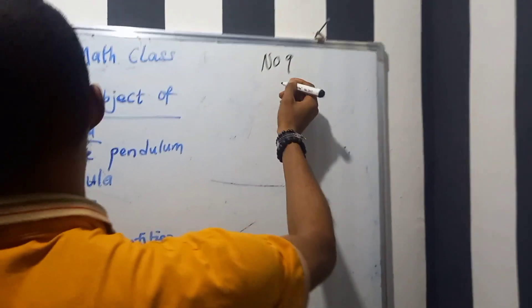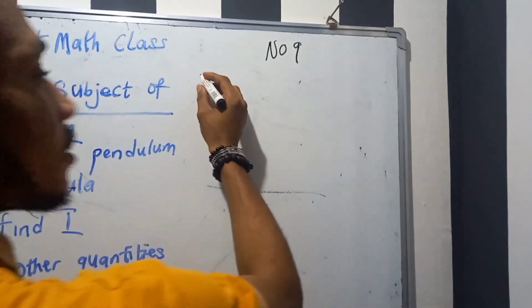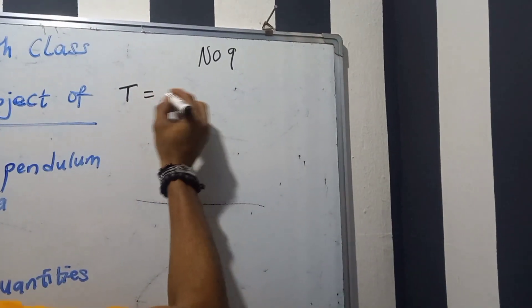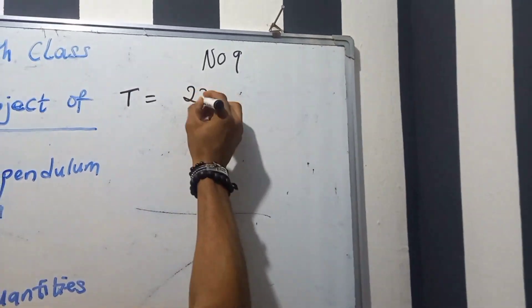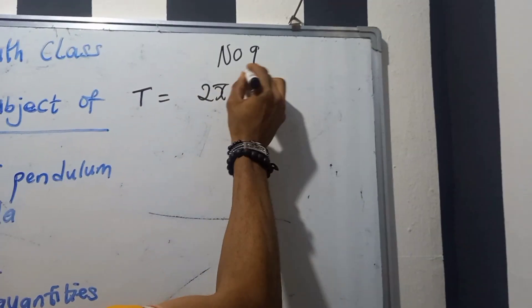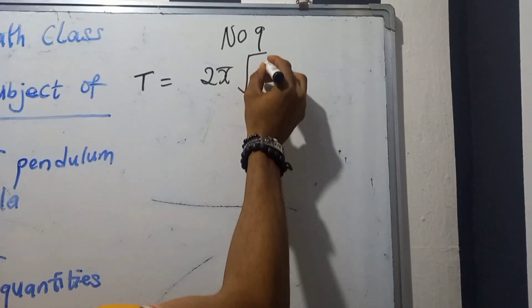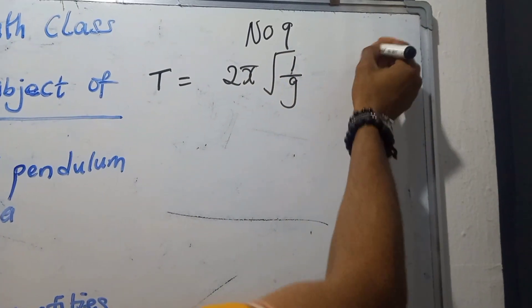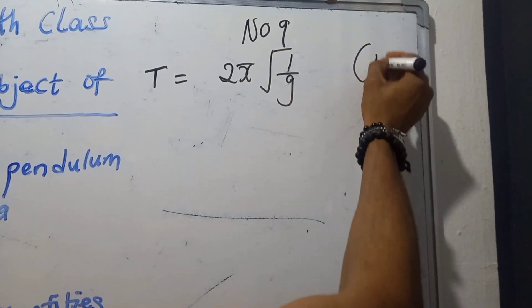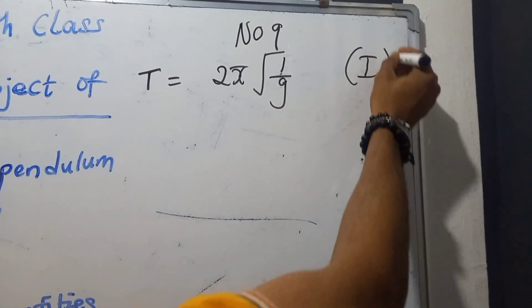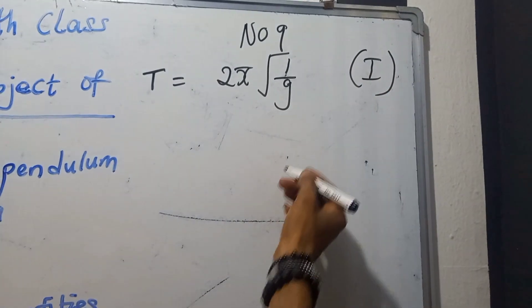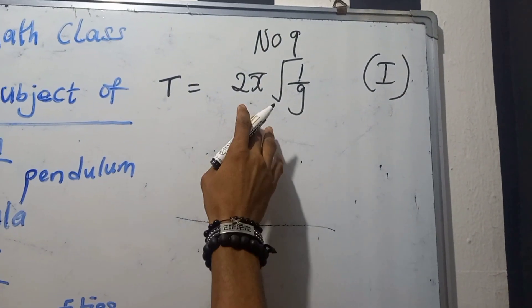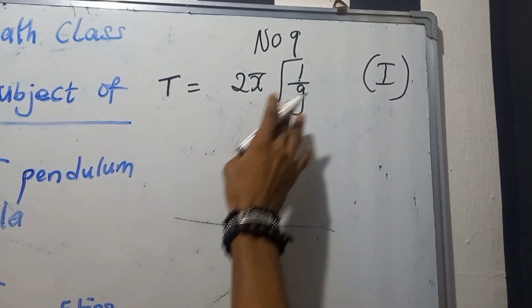The question says: T equals 2π square root of i over g. You should find what i equals to. This is a submitted formula and it is very simple to solve this one — to find i.